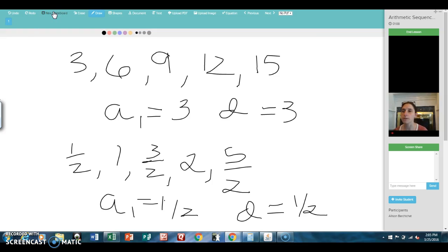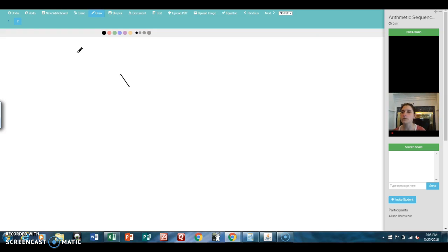So now let's look at a formula. The formula that we use for finding the nth term for an arithmetic sequence is An equals the first term A1 plus N minus 1 times the common difference D. So I have some example problems for us to try.